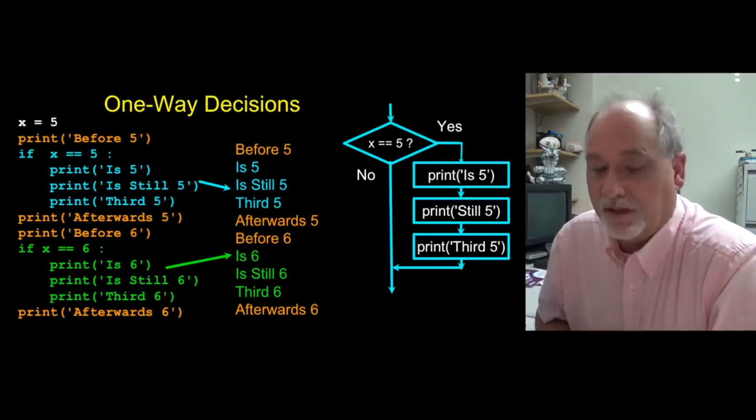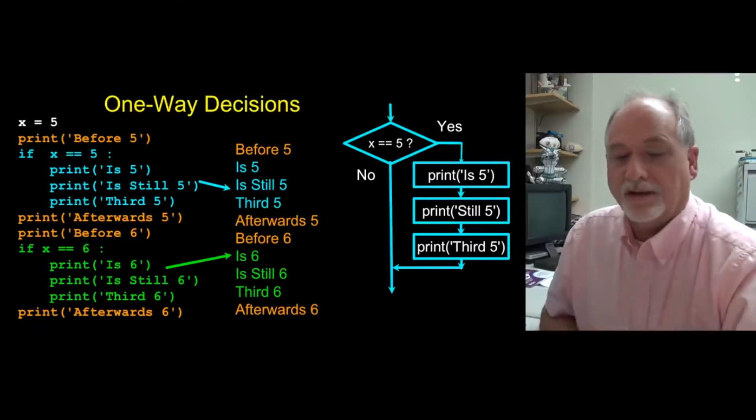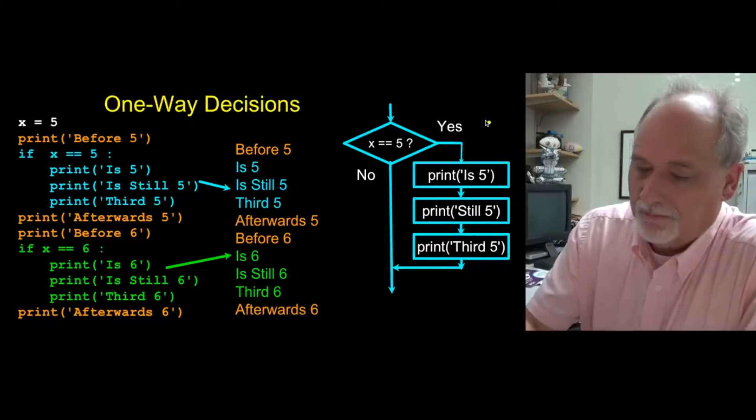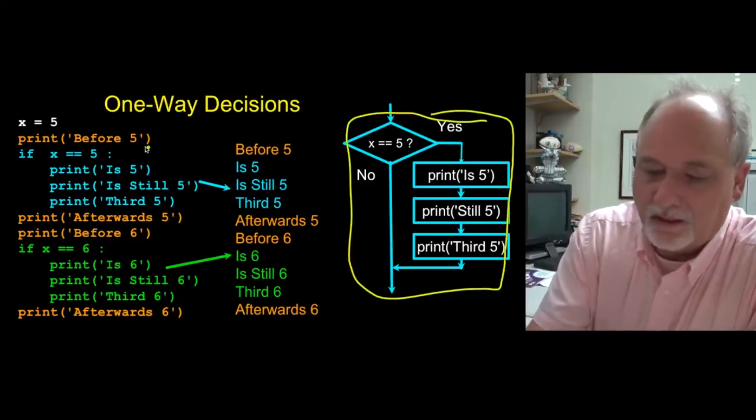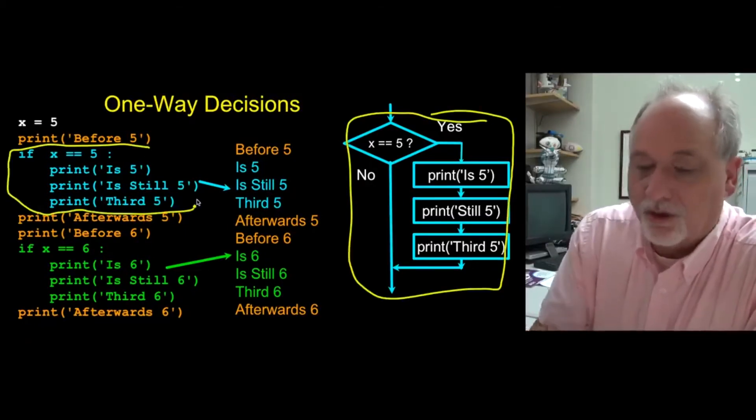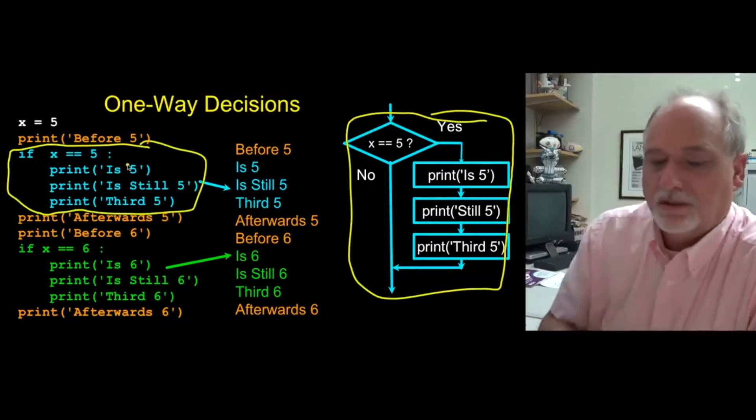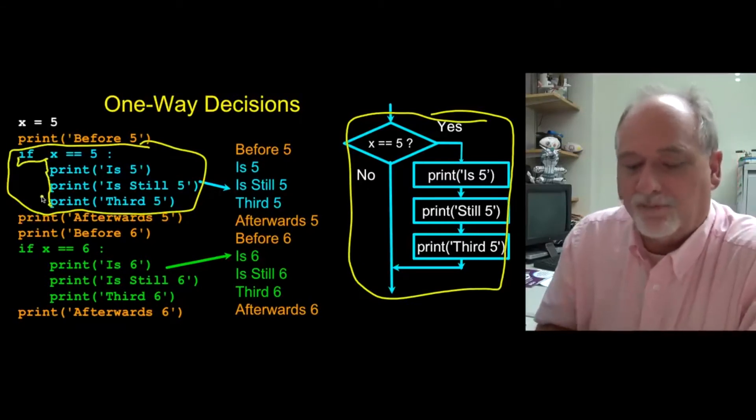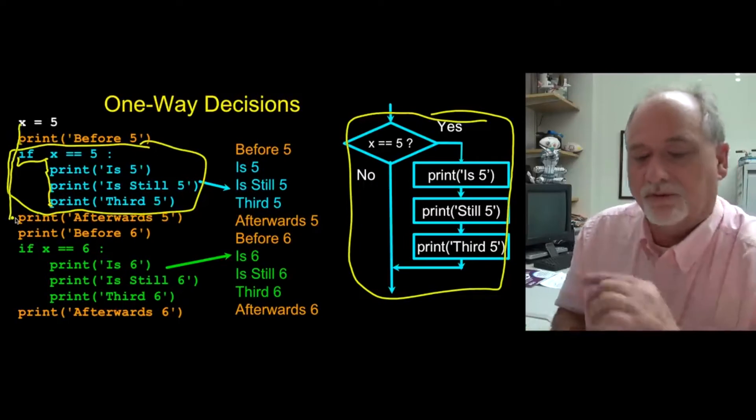Now, you don't just have to have a single line of text in the indented block. And this will be something you're going to get used to. So if we indent more than one line, then the conditional code is actually these three lines. So the idea is you have an if statement, you come in, you do an indent, and as long as you stay indented, you stay in that if block. If it's false, it just skips all of those.